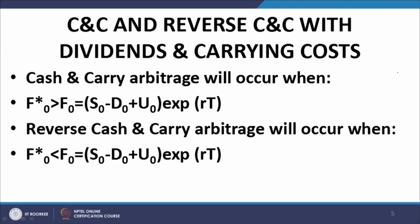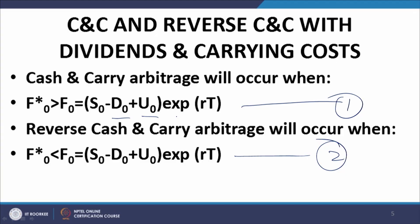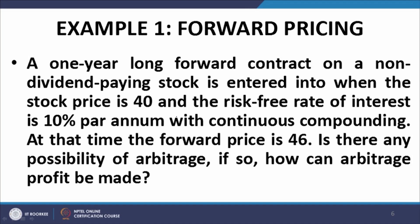When carrying the asset entails receipt of dividends or payment of carrying costs, the arbitrage conditions get modified. Cash and carry arbitrage operates when equation 1 holds, and reverse cash and carry arbitrage operates when equation 2 holds. The factor D0 is the present value of dividends received while holding the asset from 0 to T, and U0 is the present value of carrying costs — such as storage rent, insurance premium — incurred by holding the asset over that period.